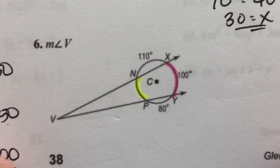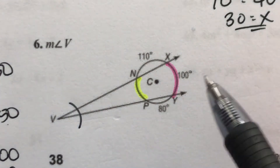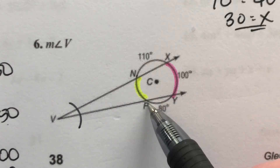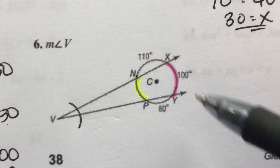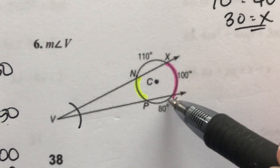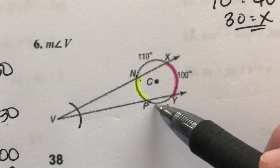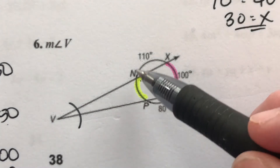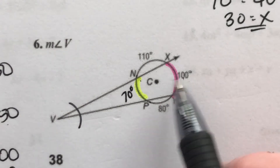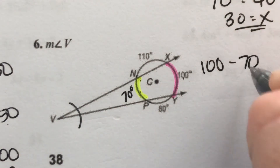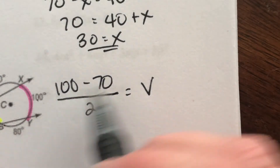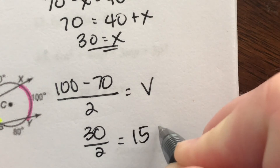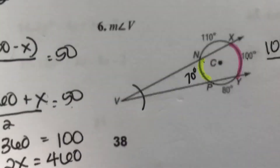Number six: we're looking for the measure of angle V. First, I need to find the missing arc: 110 plus 100 plus 80 is 290, so the missing arc is 360 minus 290, which is 70 degrees. Now big minus little divided by two: 100 minus 70 divided by two. 100 minus 70 is 30, divided by two equals 15. The measure of angle V is 15 degrees.